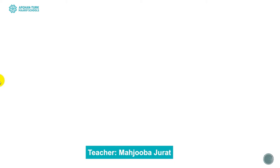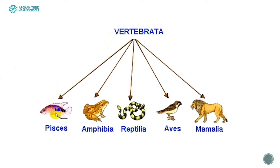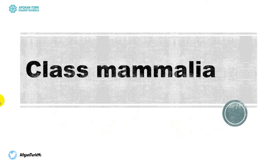Hey everyone, I hope all are well. If you remember, till now we talked about vertebrates or chordate animals. We can divide vertebrates in two ways: superclass Pisces and superclass Tetrapods. We divided superclass Pisces into three classes: Agnatha, Osteichthyes, and Chondrichthyes. Superclass Tetrapods got classes like amphibians, reptilia, and birds. Today we are going to talk about the last class, which is Class Mammalia.